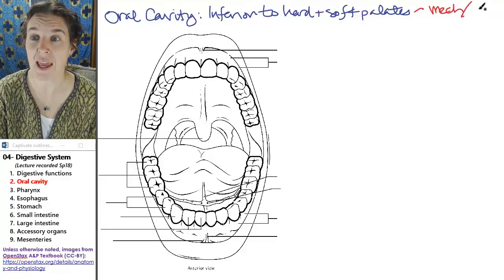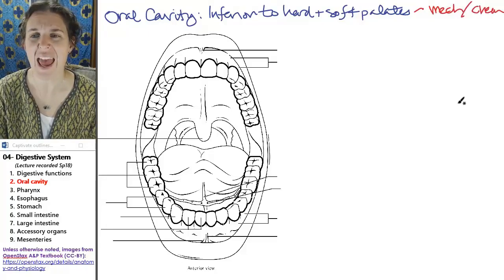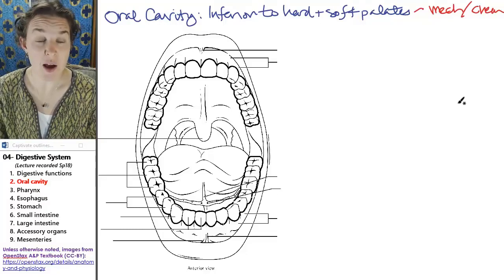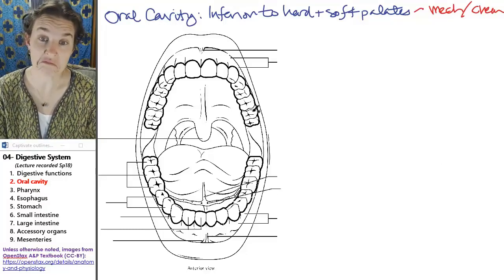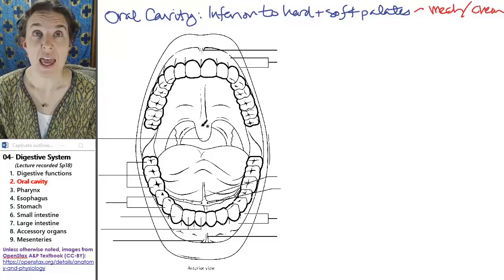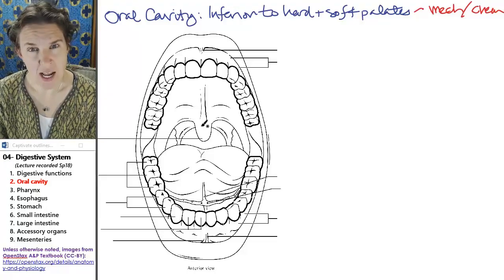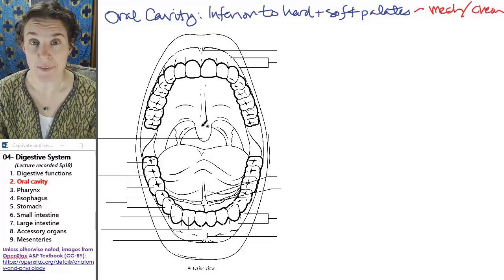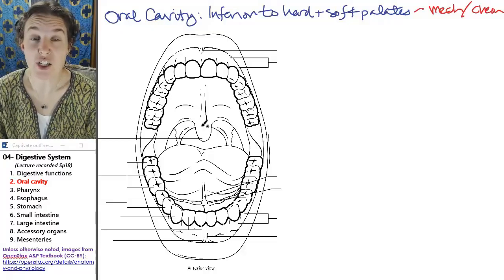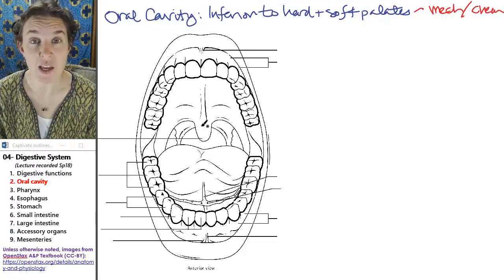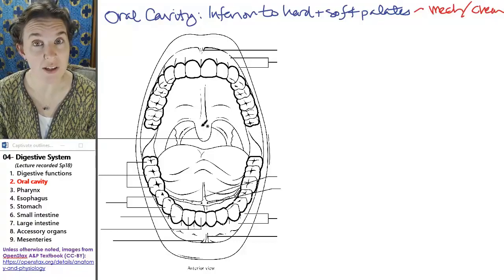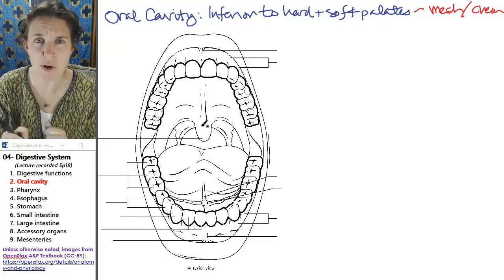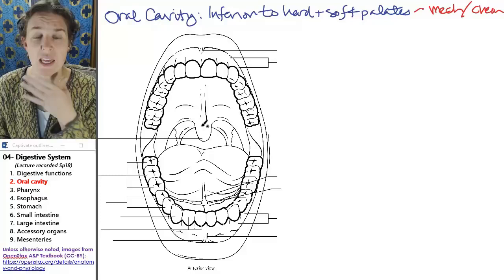So mechanical and chemical. And the mechanical digestion happens because of whom? The teeth. Chemical digestion happens because of whom? Saliva. So there are actually digestive enzymes, digestive chemicals in your saliva that begin chemically breaking down your food in your mouth.